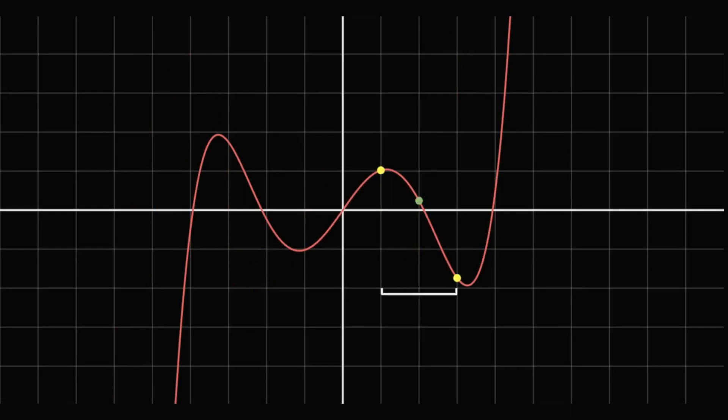This process is called bisection, and it essentially traps a root between two values. It's a simple and robust algorithm that works well for most functions.